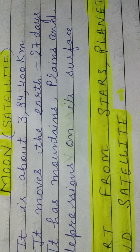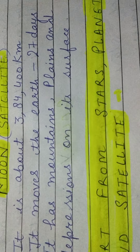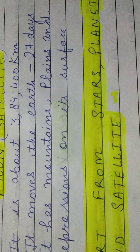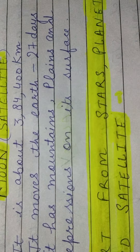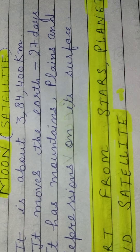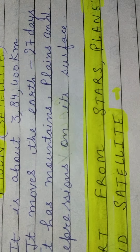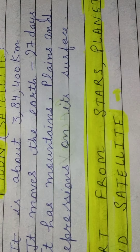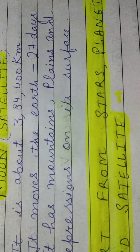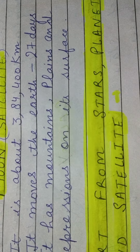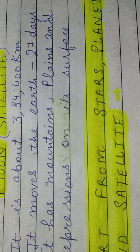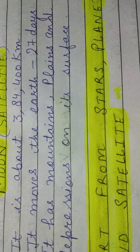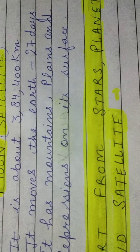Moon is our satellite. It moves around the earth, similar to how planets move around the sun. It is about 384,400 kilometers away from our earth, so it appears very big because it is nearer to the earth than other celestial bodies.